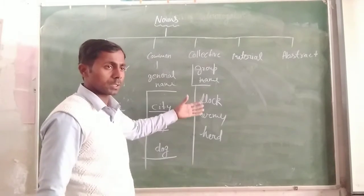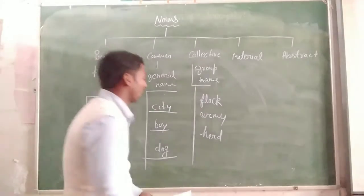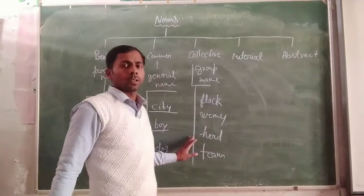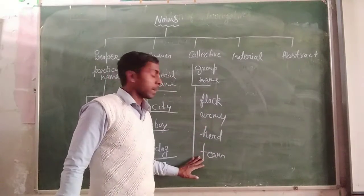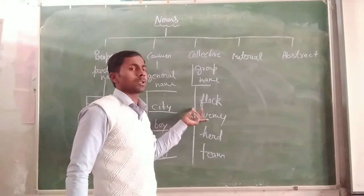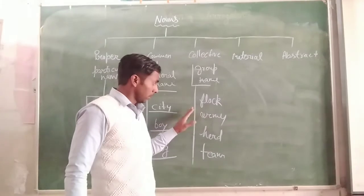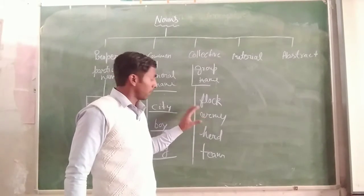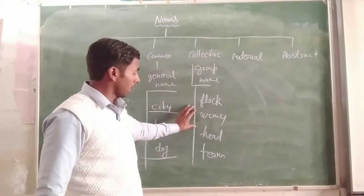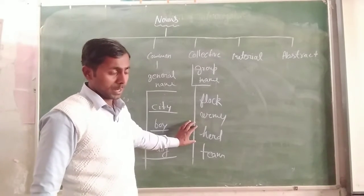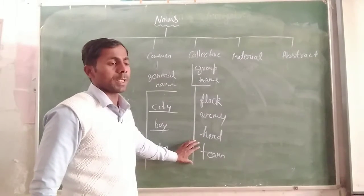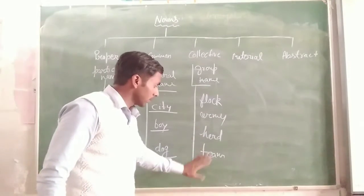These words are used for the group of any person, place, animal, or team. Many of the players included in the team, many of the animals are in the herd, and many of the soldiers use the word army. When soldiers make a group it is called army, when animals make a group it is called herd, and when persons make a group it will be team.